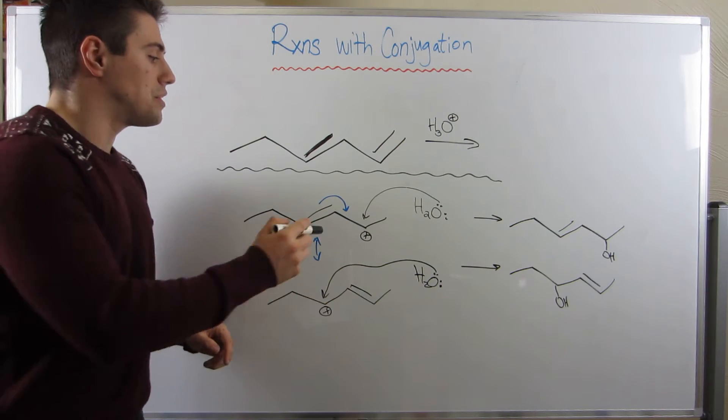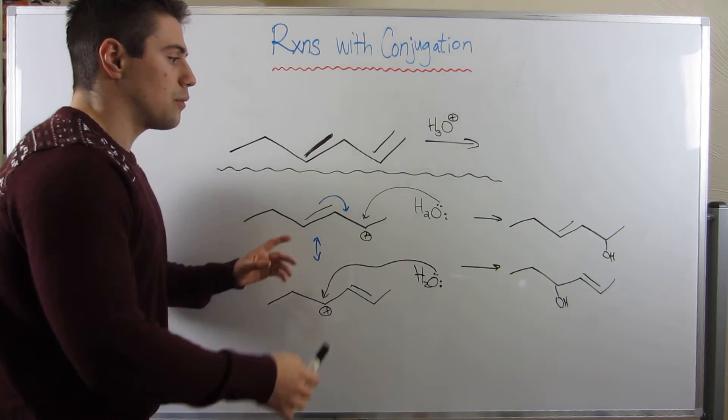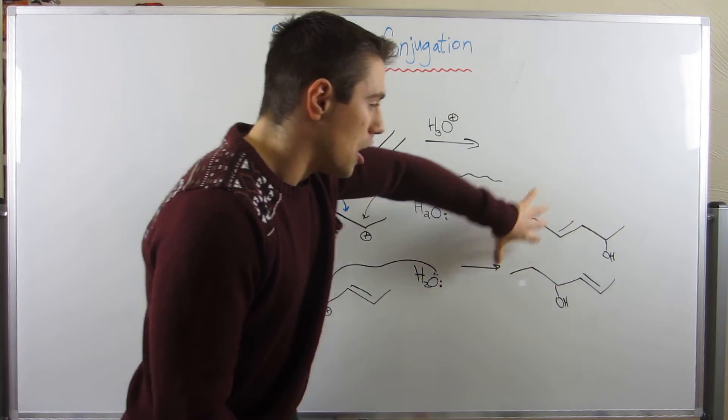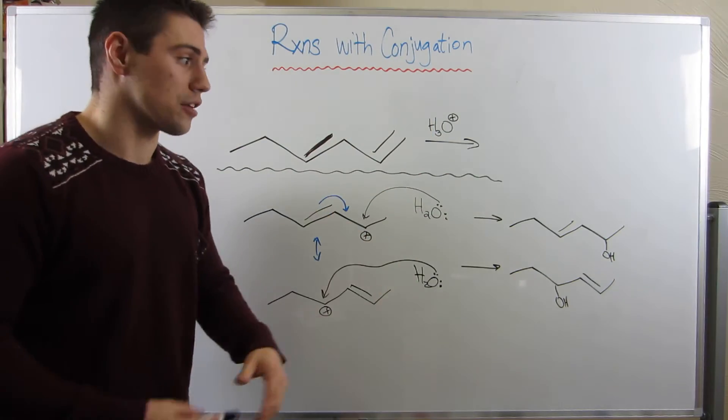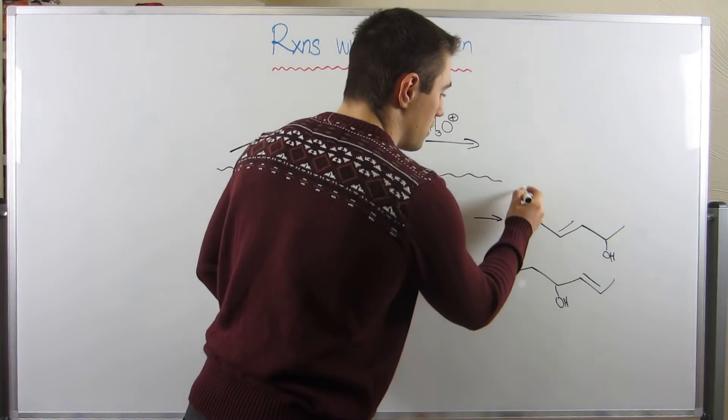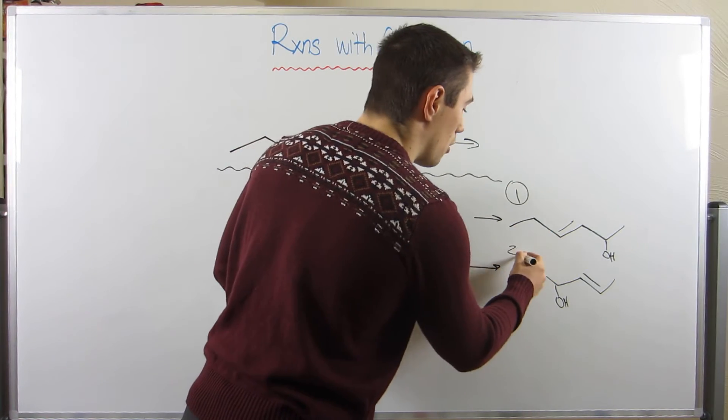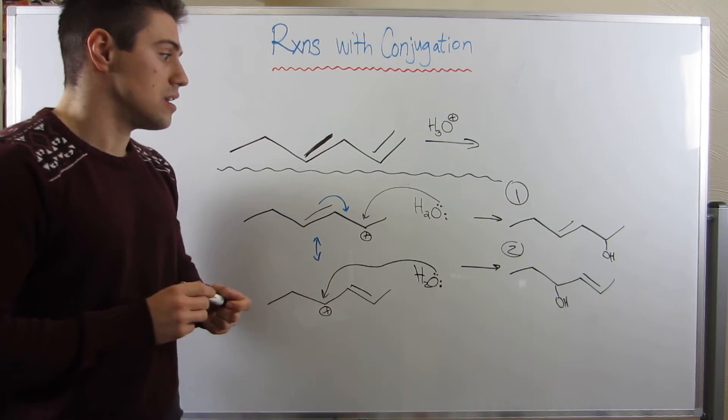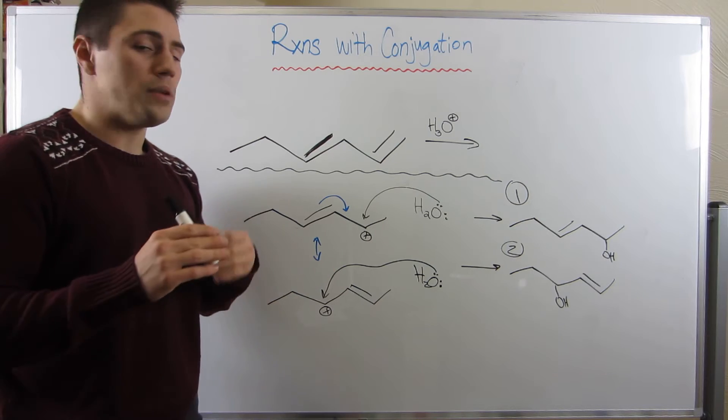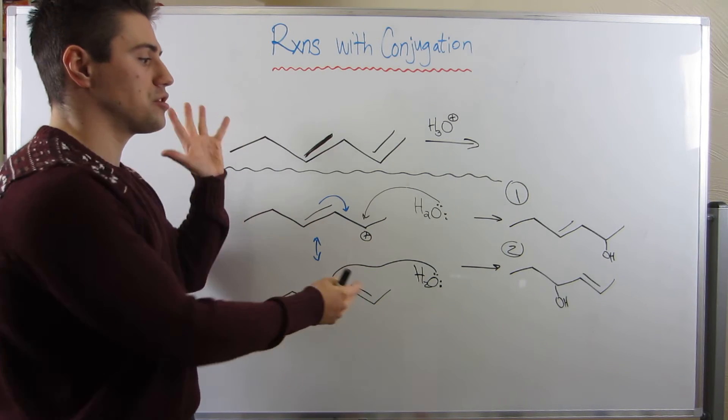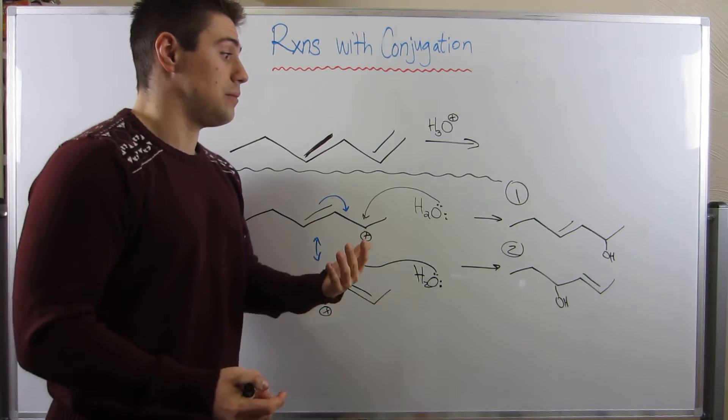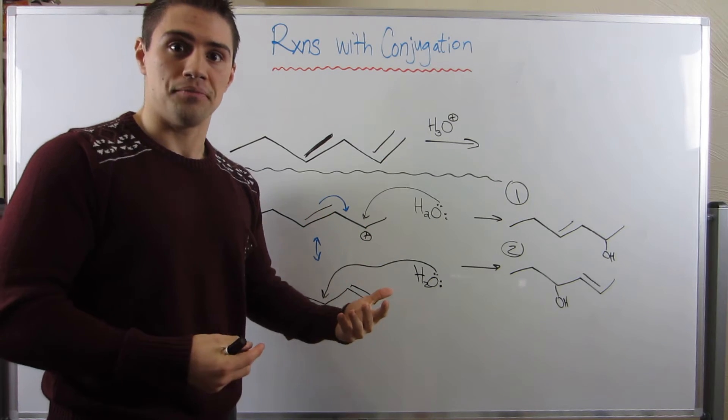And not only that, but there will be some resonance that occurs that will help you kind of have this distribution of more than one product. I'm telling you that you will get this alcohol product, and you will also have this alcohol product. And I guarantee you will be asked some form of question like this on whatever exam you take that covers conjugation.